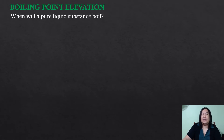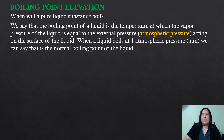When will a pure liquid substance boil? We all know that water boils at 100 degrees Celsius, but that kind of definition is incomplete when describing the boiling point of a particular substance. We say that the boiling point of a liquid is the temperature at which the vapor pressure of the liquid is equal to the external pressure, or the atmospheric pressure acting on the surface of the liquid. When the liquid boils at one atmospheric pressure, we can say that it is the normal boiling point of the liquid.